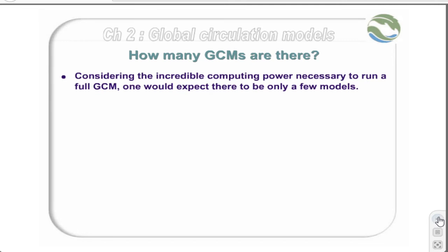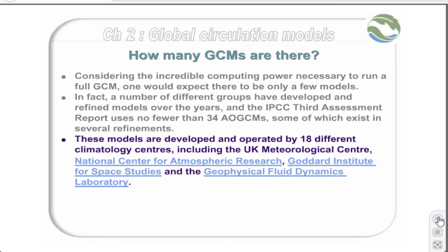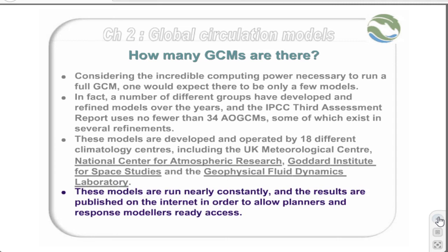Considering the incredible computing power necessary to run a full GCM, one would expect there would be a limited number of models. In fact, a number of different groups have developed and refined models over the years, and the IPCC Third Assessment Report uses no fewer than 34 AOGCMs, some of which exist in several refinements. These models are developed and operated by 18 different climatology centres, including the UK Met Office, National Centre for Atmospheric Research, Goddard Institute for Space Studies, and the Geophysical Fluid Dynamics Laboratory. These models are run nearly constantly, and the results are published on the internet to allow planners and response modellers ready access.